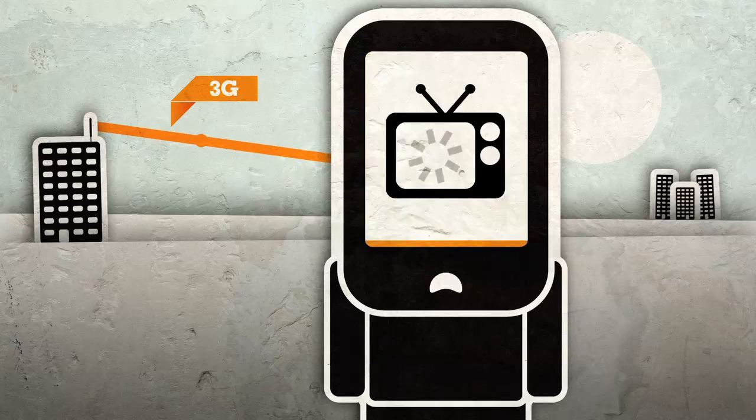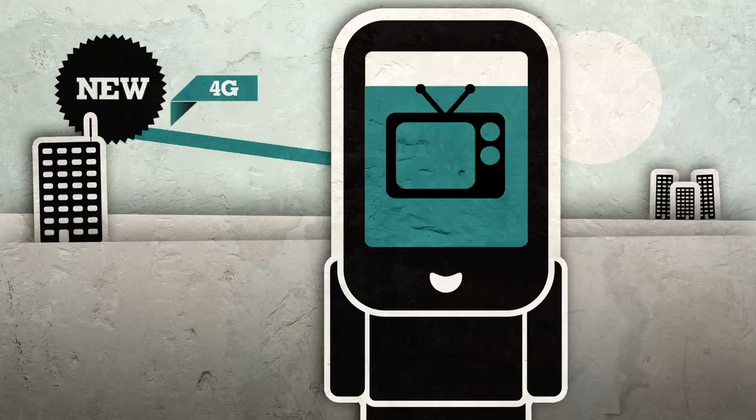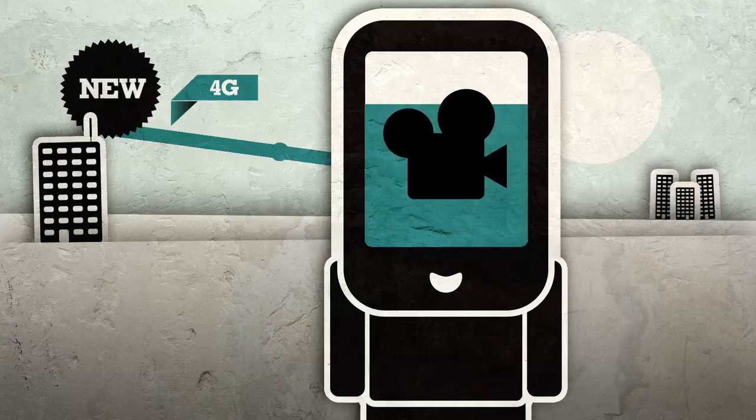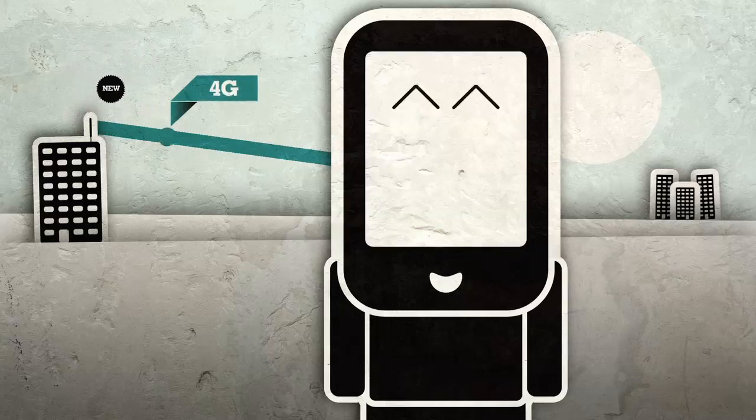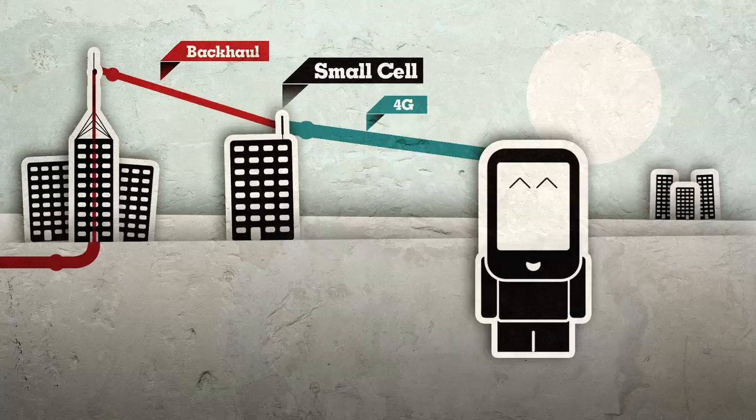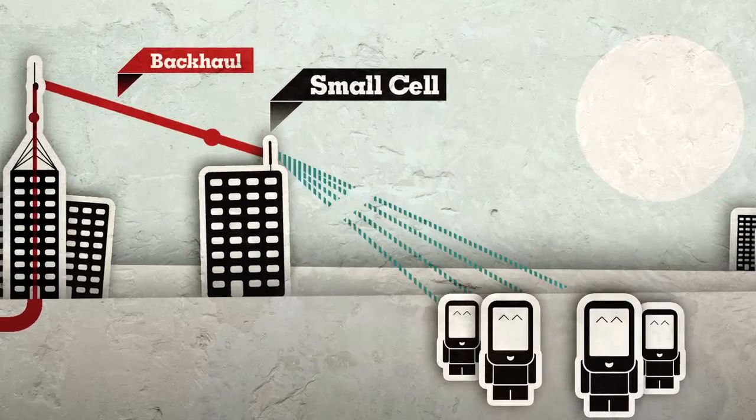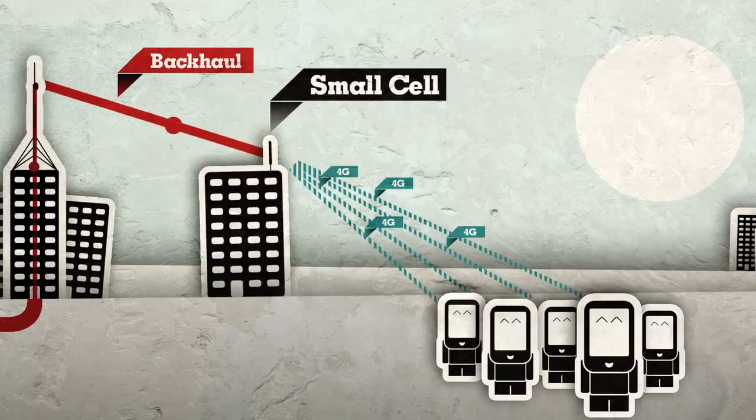Mobile operators are responding to this demand with 4G long-term evolution networks, enabling richer applications and faster connectivity. In metro areas, small cell networks will be deployed to provide more capacity and faster mobile broadband to end users.